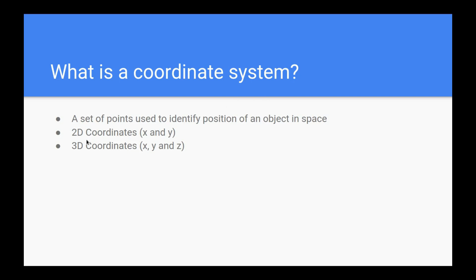As you can see here, we've got 2D coordinate spaces and 3D coordinates. For 2D coordinates you can use two numbers to identify the position of an object, and for 3D coordinates you define the position of an object using three numbers.